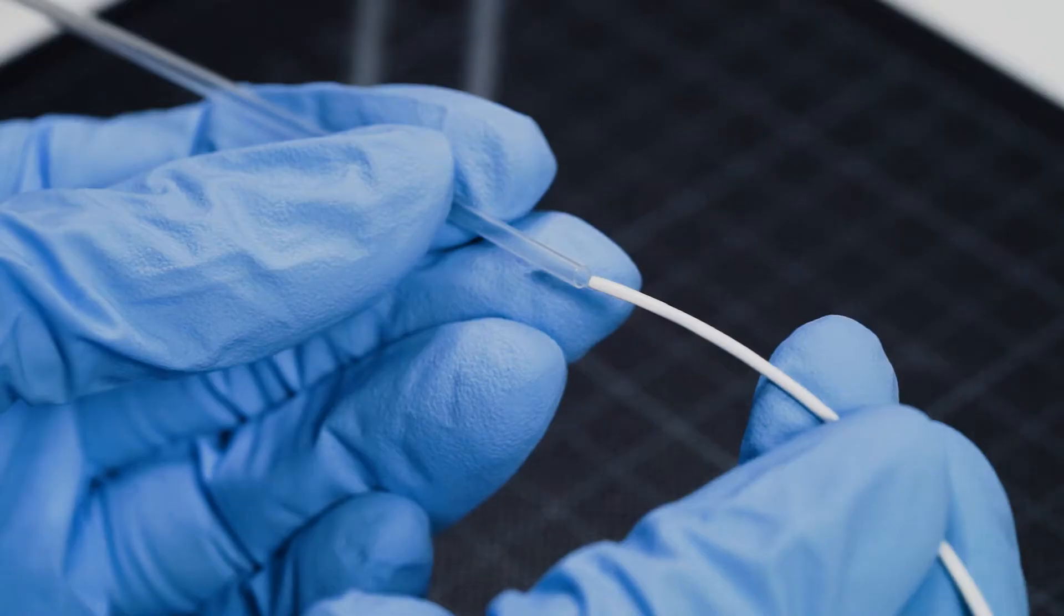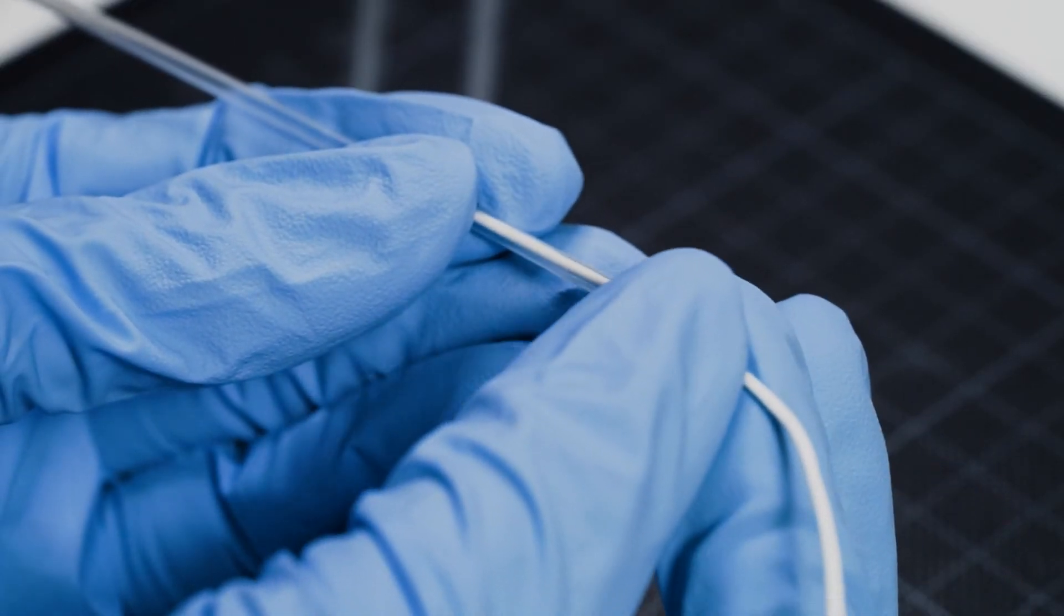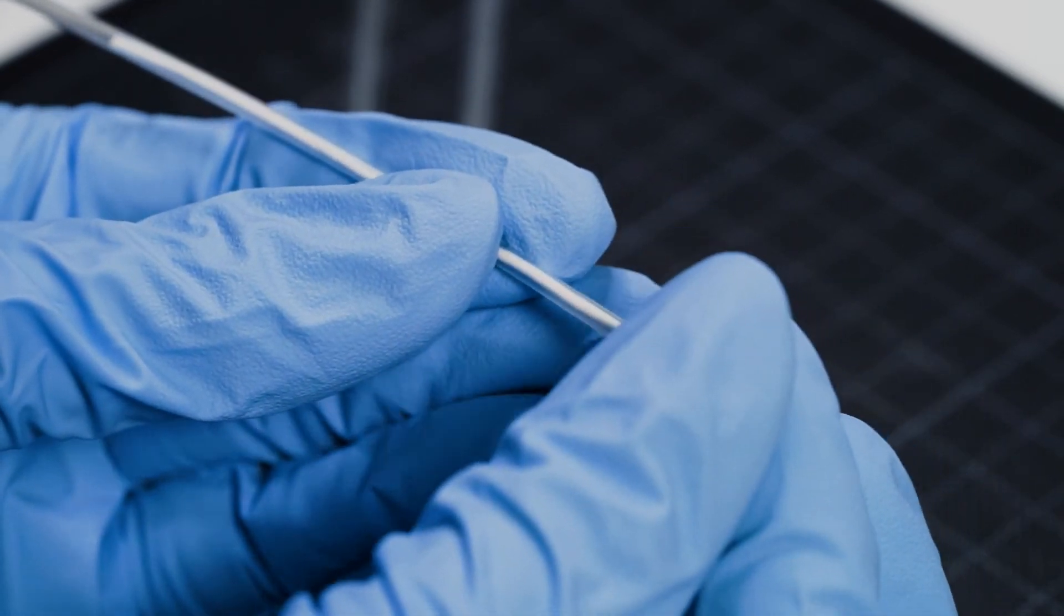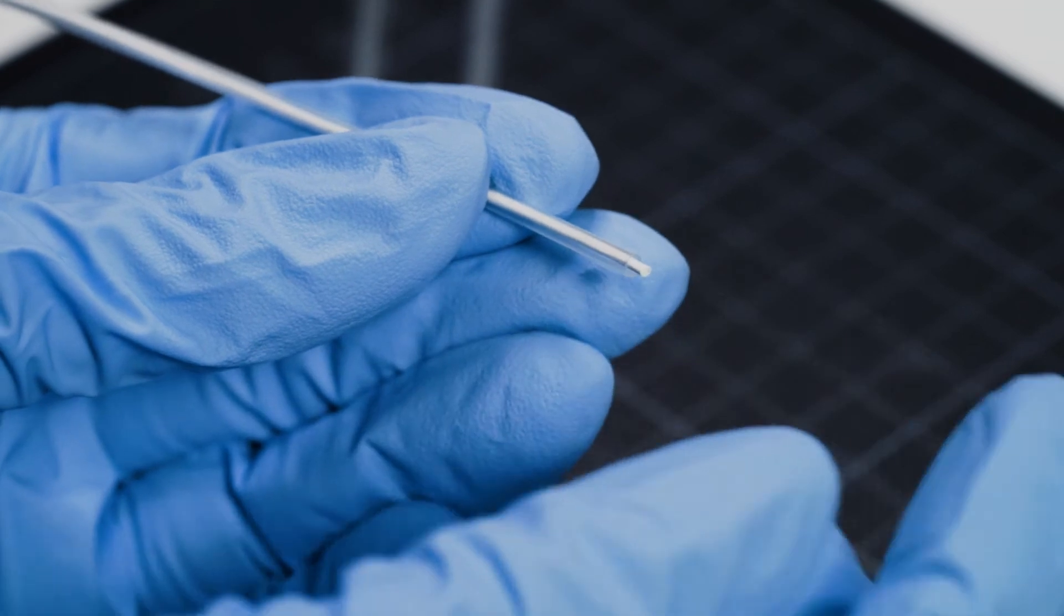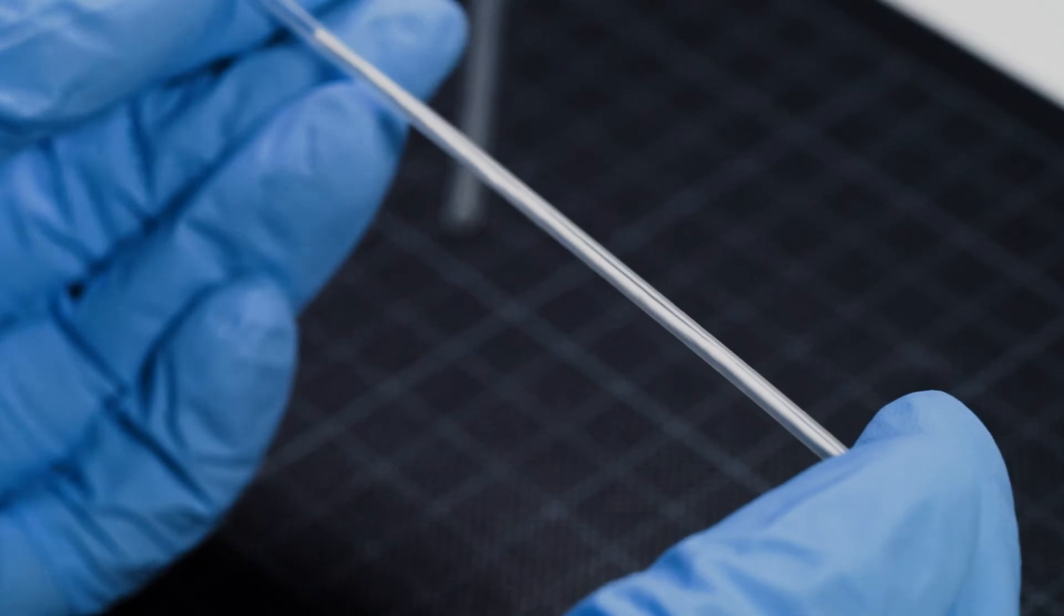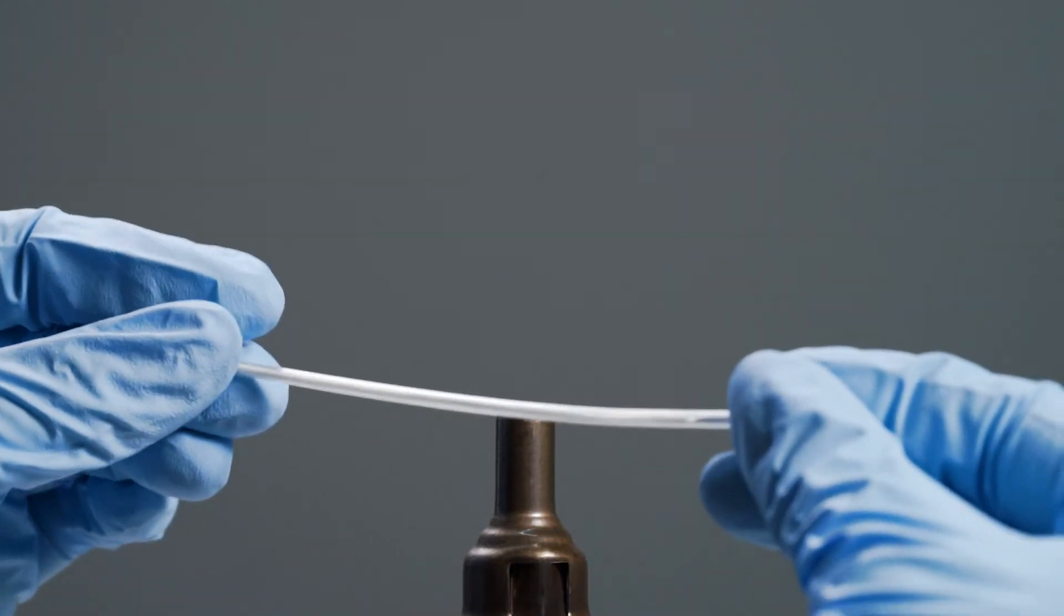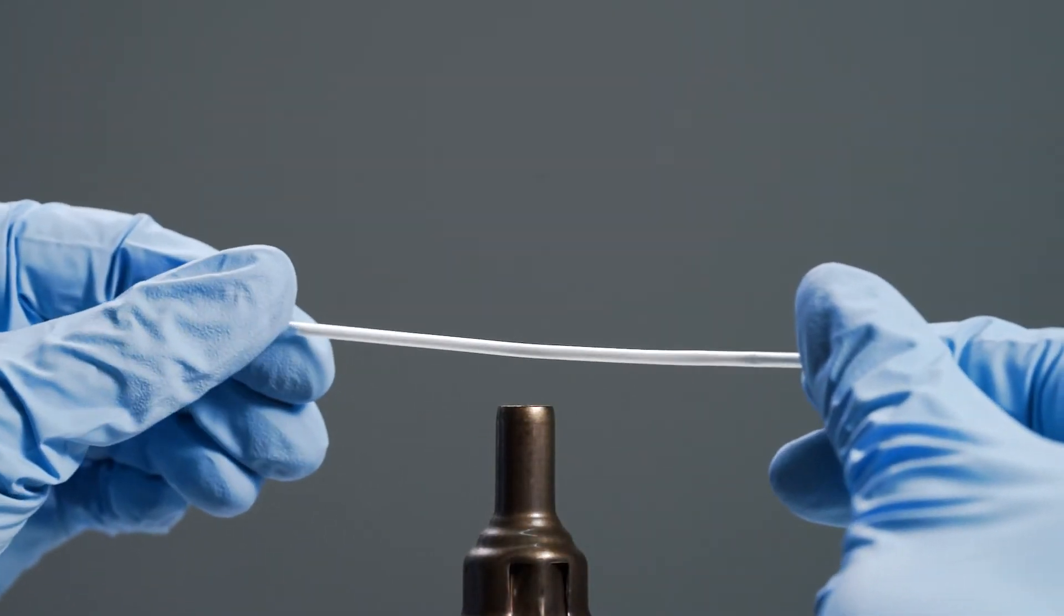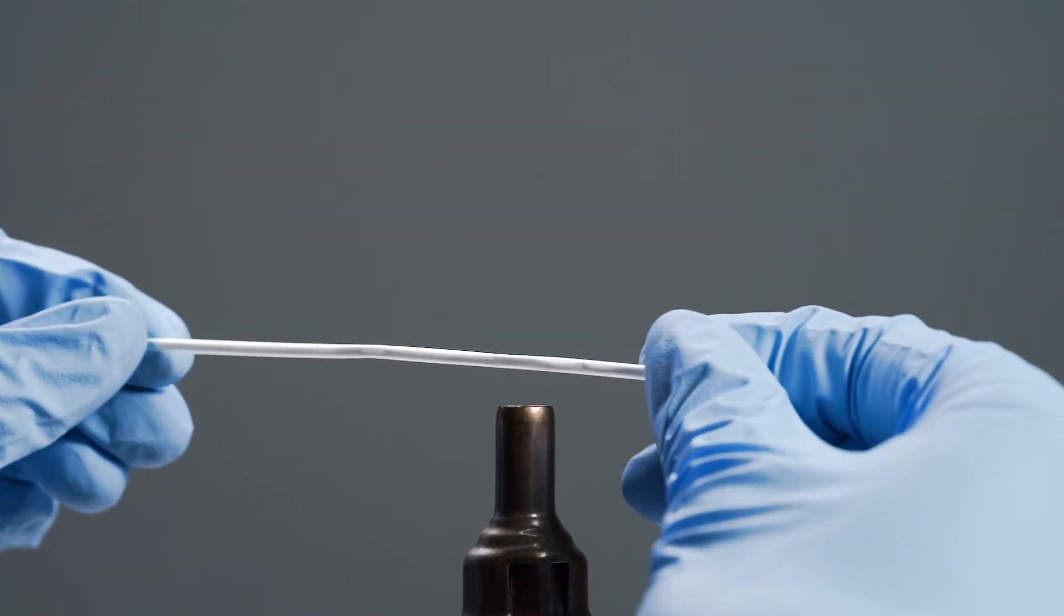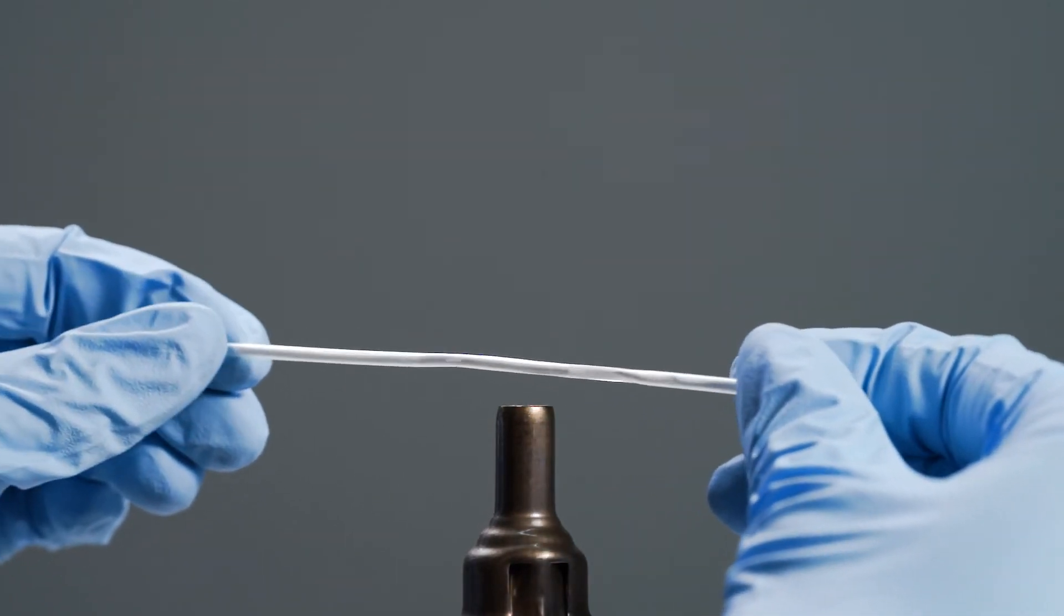Insert the hollow fiber membrane into the heat shrink tube. Shrink the tube using an appropriate heat source, for example, an oven or hot air gun, at a temperature of approximately 110 degrees Celsius or 230 degrees Fahrenheit.